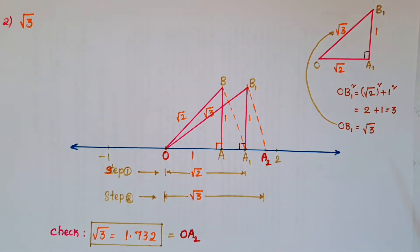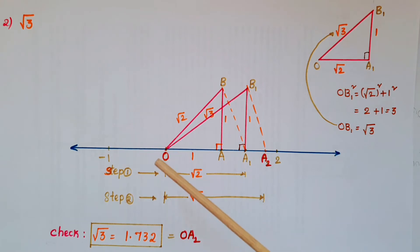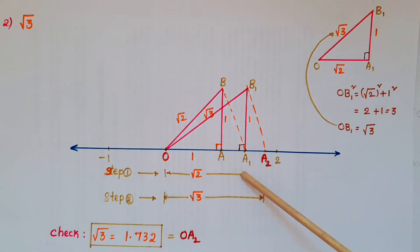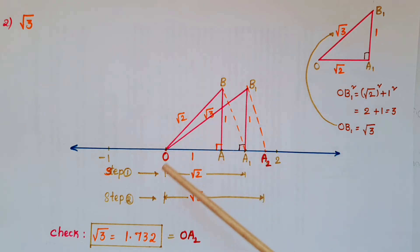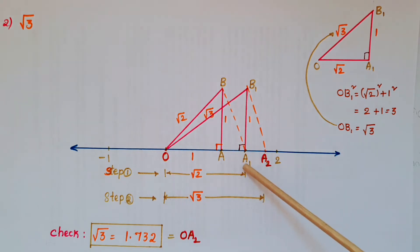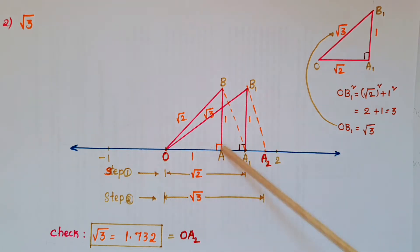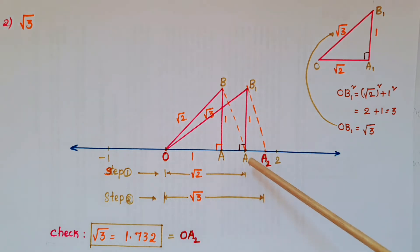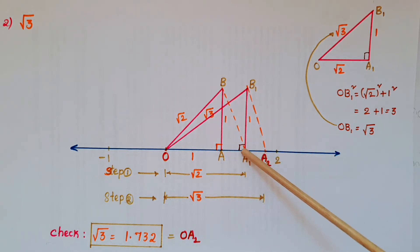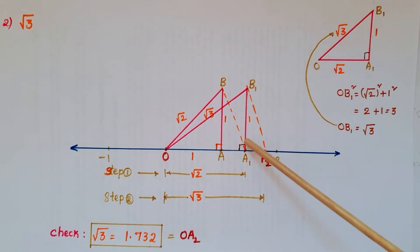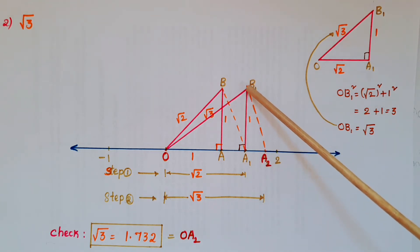Now I am going to show how to represent root 3 on the number line. First, we need root 2 on the number line, which we just constructed. Once root 2 is marked at A1, draw a perpendicular line at A1 with a distance of 1 unit.